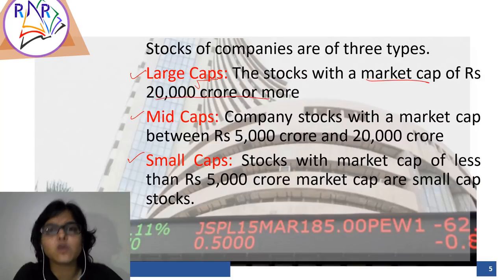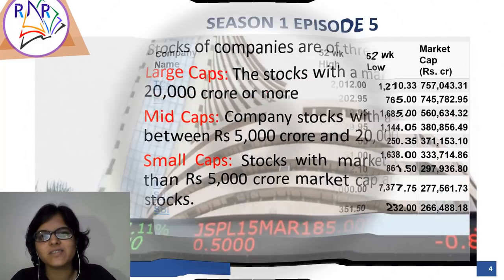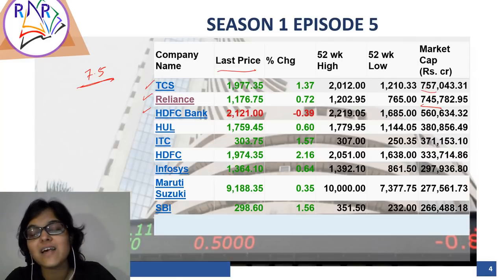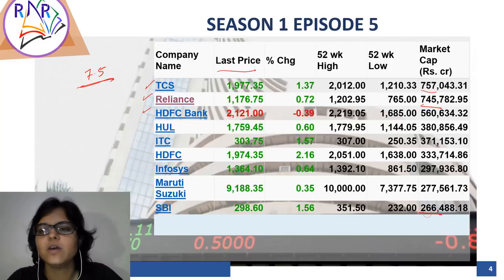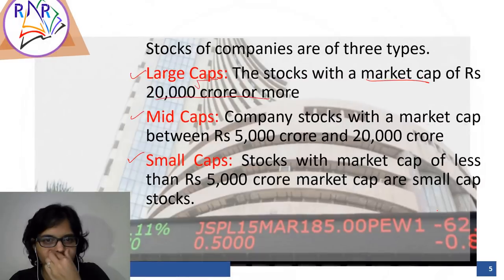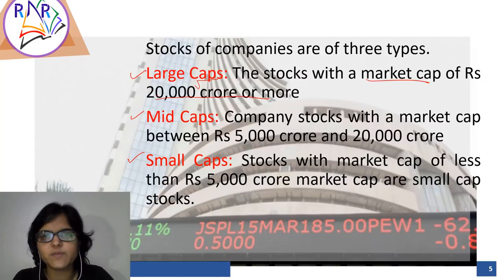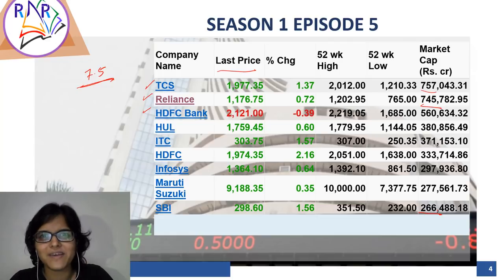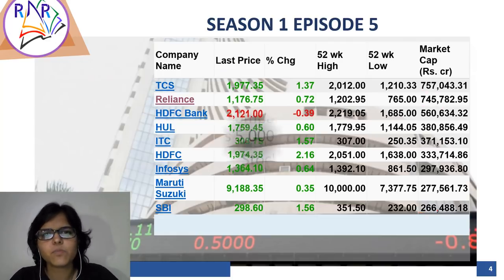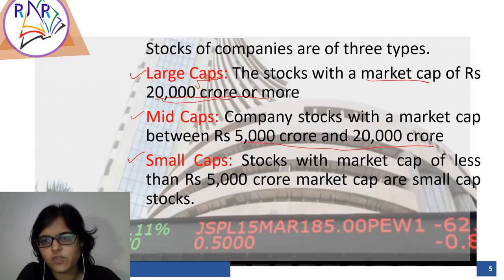Jinka bhi market capitalization 20,000 crore ya zyada hota hai, they'll be termed as large cap companies. Now you will understand that 20,000 crore is a very small amount for TCS, because TCS toh 7.5 lakh crore ka hai - and hum yahan limit 20,000 crores ki bol rahe hain. Agar aap 9th position ki company dekhenge toh bhi it is 2.6 lakh crores of market capitalization, which is SBI - and minimum limit kitna rakha hai, 20,000 crores. Iske upar koi bhi company hai toh yeh large cap company kehlayegi. Kaafi log isko blue chip companies bhi bolte hain - these are generally well-settled, renowned companies. Inko hum large cap companies bolenge because inka market cap 20,000 crores or more hai. Mid caps will be in the range of 5,000 crore to 20,000 crore, whereas small caps will be market capitalization of less than 5,000 crores.